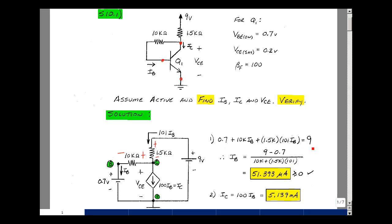Now I can solve for I sub B. It's going to be 9 minus 0.7 divided by 10K and divided by 1.5K times 101. And that's 51.393 microamps. Is that greater than or equal to 0? Yes, so that checks.